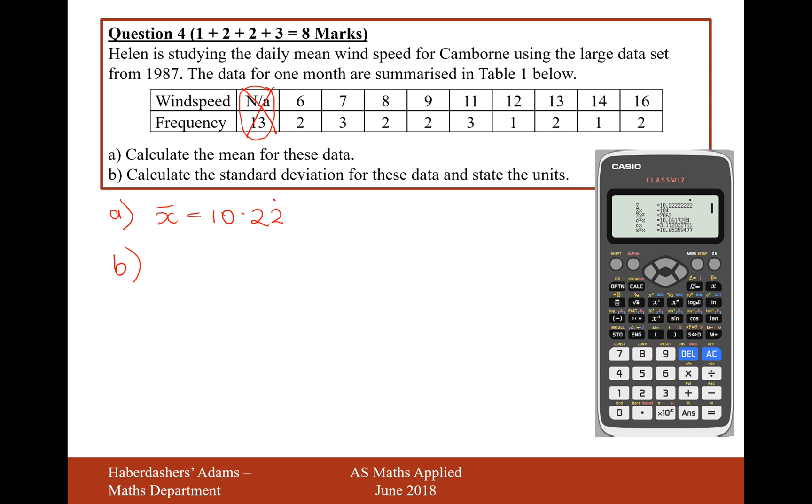And moving on to part B, calculate the standard deviation, where the standard deviation will be the one second from bottom, 3.17. But maybe we might want to just show some workings out, because it is worth two marks after all.